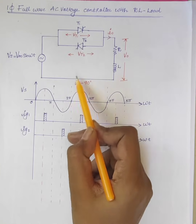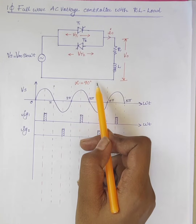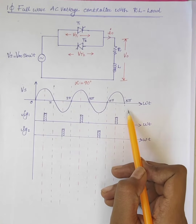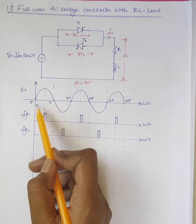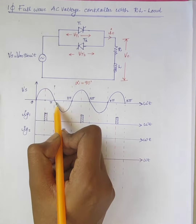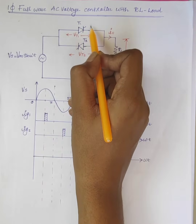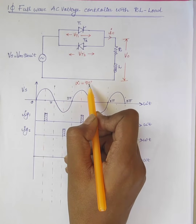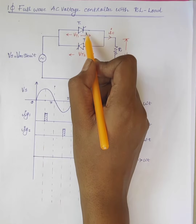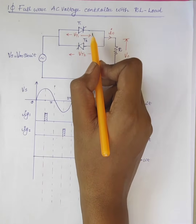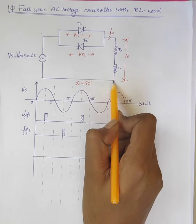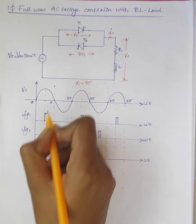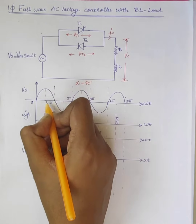Consider the firing angle alpha equal to 90 degrees. This is the supply voltage Vs. During the positive half cycle, from 0 to π, T1 is forward biased. At ωt equal to alpha, which is 90 degrees, T1 is triggered, and current flows through the path Vs → T1 → load → back to the source. So the output voltage V0 is positive Vs.